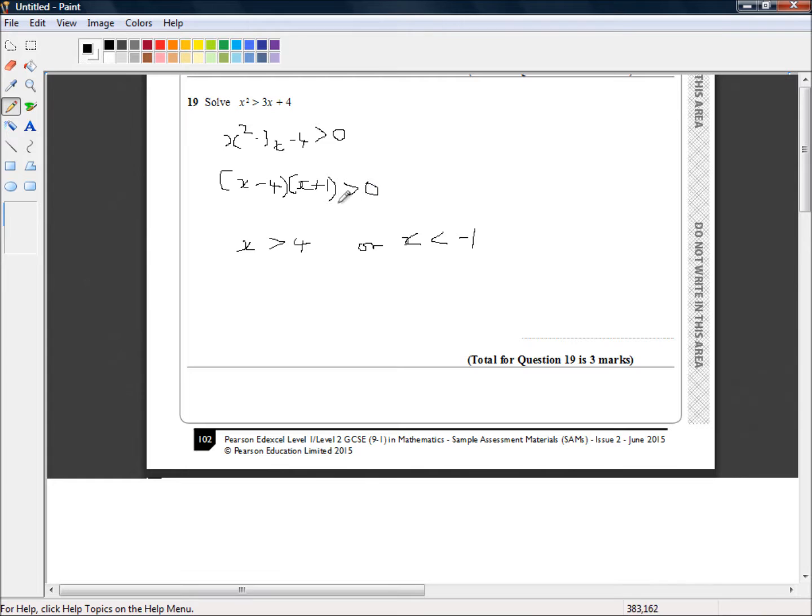And then if x is less than negative 1 if we put a number that's less than negative 1 that means x is negative so a negative minus 4 is going to be an even bigger negative. And if x is less than negative 1 and we add 1 we're going to end up with a number that's less than 0 or a number that's negative. And a negative times a negative is also a positive which is greater than 0. So both these terms satisfy this inequality.